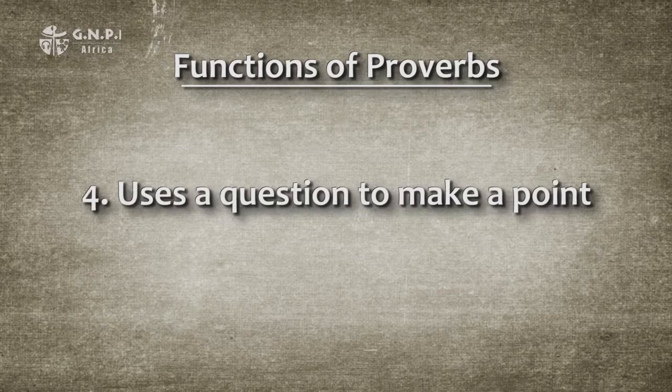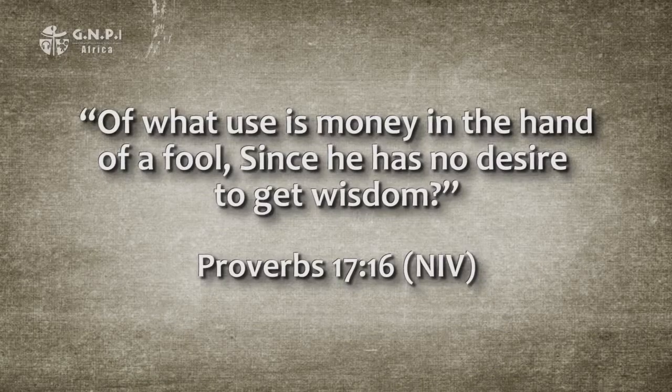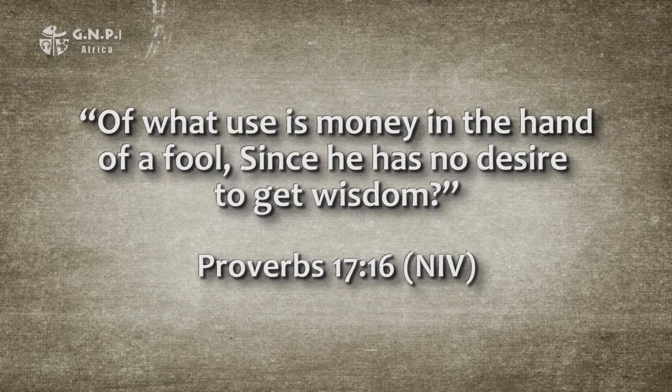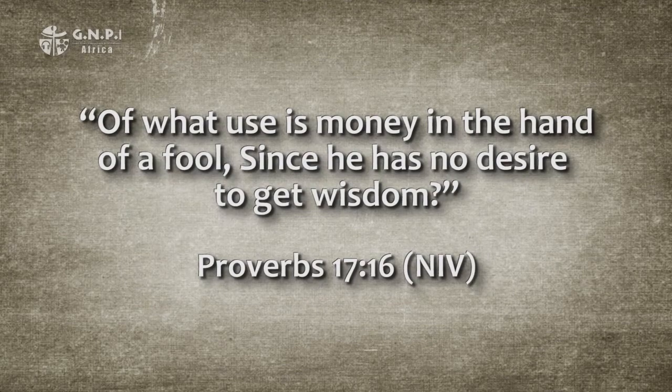Sometimes a proverb uses a question to make a point. Consider the question found in chapter 17 verse 16: 'Of what use is money in the hand of a fool, since he has no desire to get wisdom?' The proverbs found in chapters 10 verse 1 to chapter 22 verse 16 — unit 2 — have no central theme to tie them together. The unit appears to be randomly gathered. Some would suggest the randomness of the arrangement reflects life experience, and that proverbs, like life, resist topical or systematic groupings. The student's learning of proverbs would thus parallel, organizationally, what and how he learns from life.